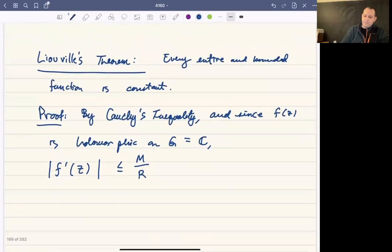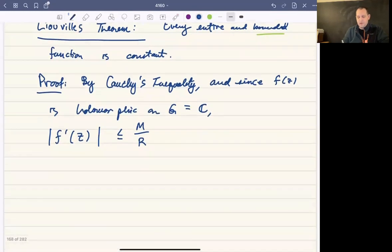Here, this M, I should just point out, this M is going to be the M that we get from the boundedness condition on the function. So remember that to be bounded means that |F(z)| is less than or equal to M for all values z. That's what bounded means. So that's where this M comes from.